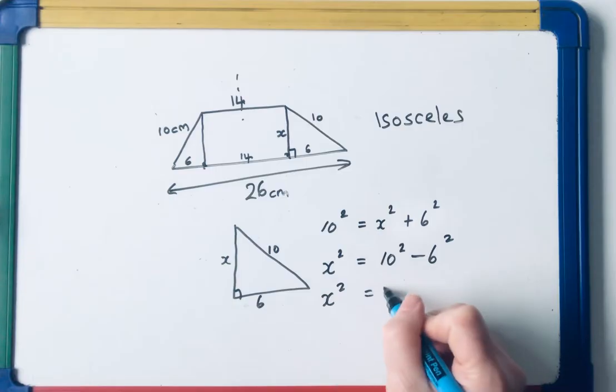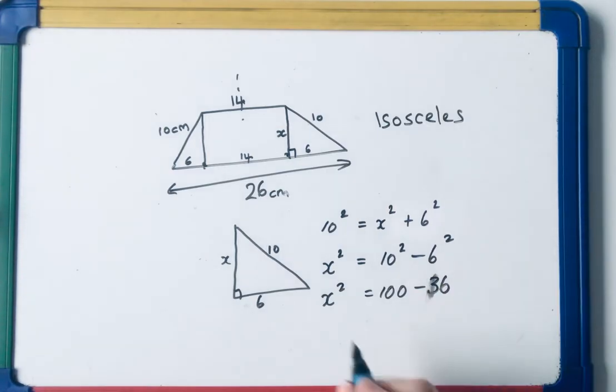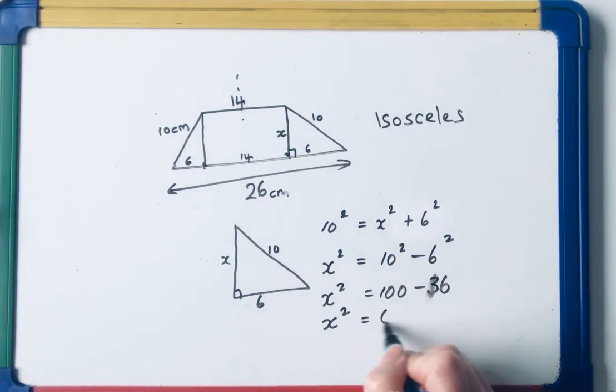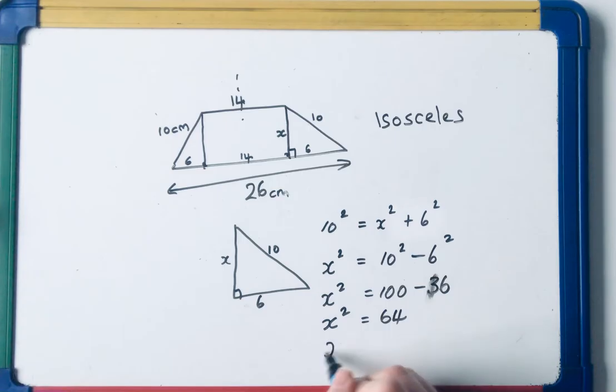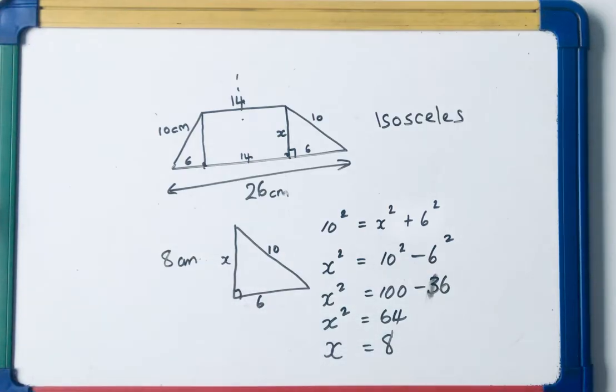So x squared is 100 minus 36. 6 squared is 36. x squared is 64. Therefore, x is the square root of 64, which is 8. So the height of this trapezium would be 8 centimeters.